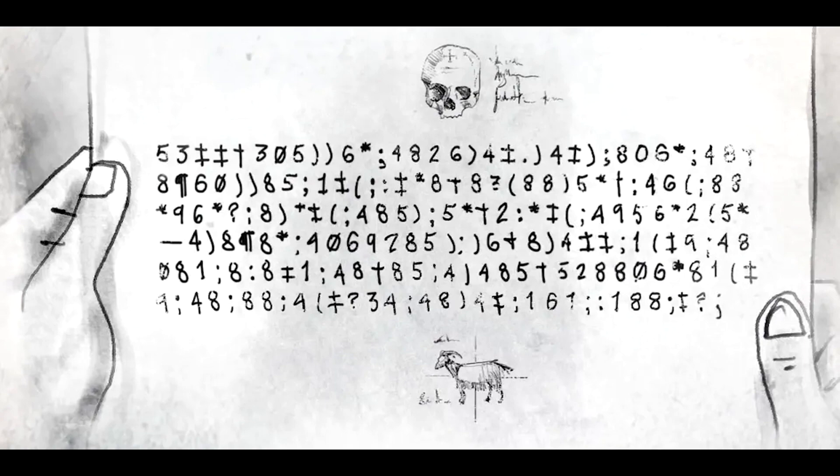It also left me in the dark for a few days, replied Legrand. Then I asked all over Sullivan's Island and the mainland about any building that was called Bishop's Hotel — for of course I dropped the old-fashioned word hostel. But I got no information. One morning I got the idea that this might refer to a family named Bessop. They have owned an old plantation about four miles north of the island for well over a century. So I went over to the mainland and asked some of the older people who worked there. One of the most aged of the women said she had heard of a place known as Bessop's Castle. She agreed to take me there, but said that it was neither a castle nor a hotel. It was just a high rock.